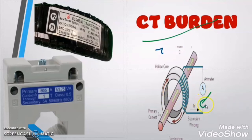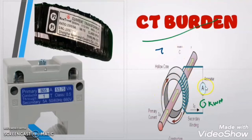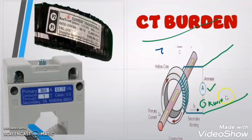For example, if we connect one kWh meter in series with the ammeter and it is connected with the same CT, then this ammeter plus kWh meter is called CT burden for this current transformer. Suppose this ammeter and kWh meter are not connected very near to the current transformer but are connected very far from it. Then the burden on this CT is due to this ammeter, due to this kWh meter, and due to the resistance of the wire connecting this ammeter and kWh meter through the secondary winding of the CT. CT burden is nothing but the total load connected to the secondary winding of the CT.